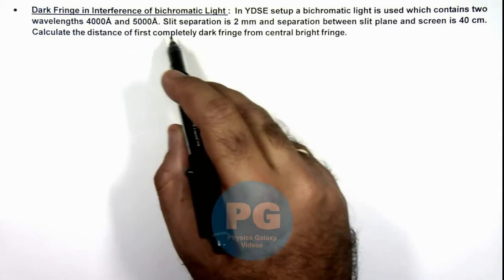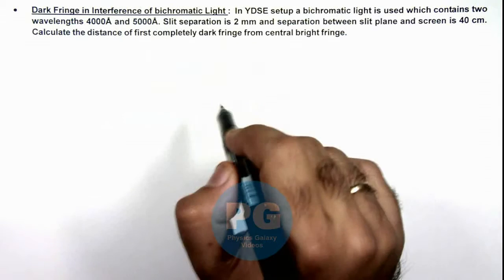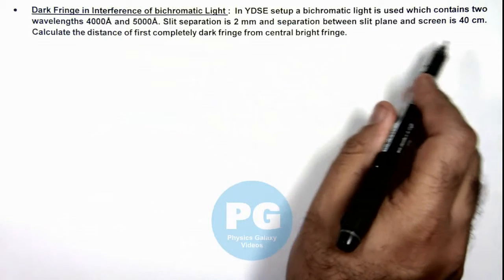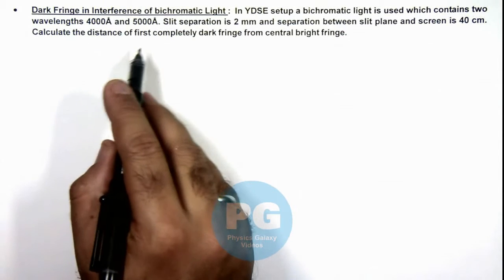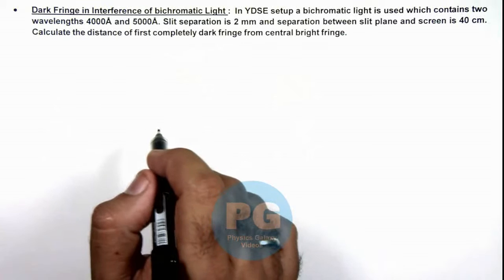The slit separation is 2mm, and separation between slit plane and screen is 40cm. We are required to calculate the distance of the first completely dark fringe from the central bright fringe.